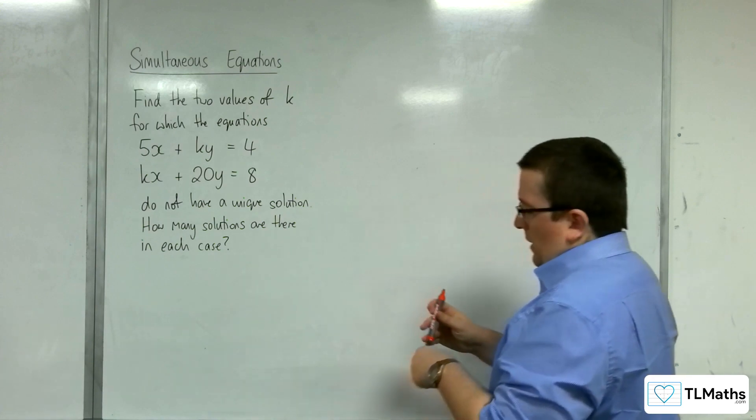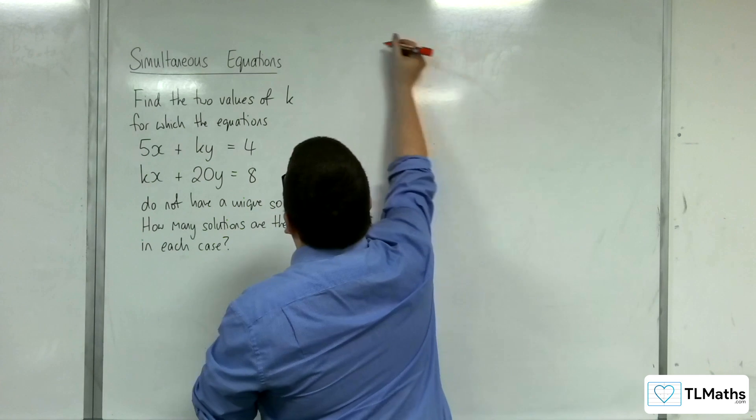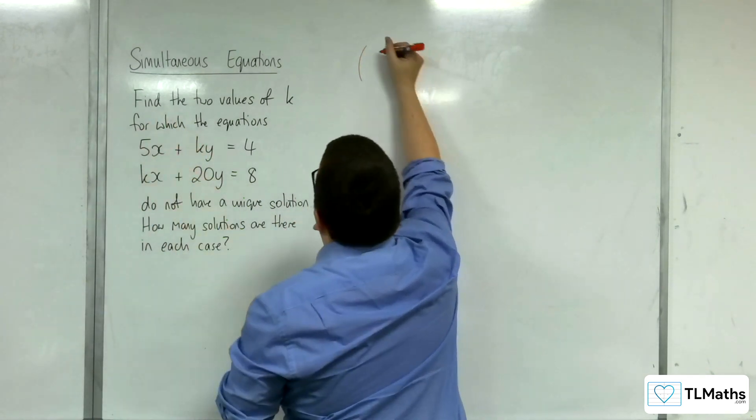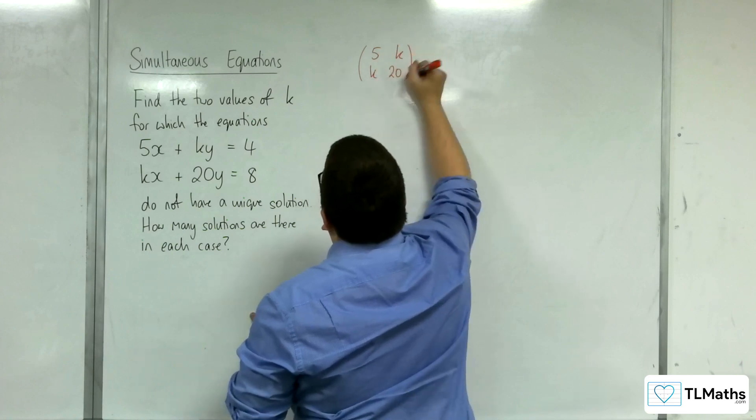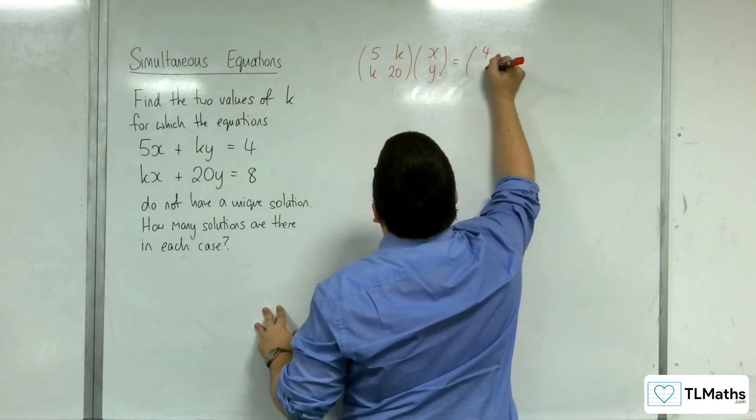So if we were going about this as we have in the previous two videos, we would first of all write down the matrix of the coefficients. So 5k, k20, and that would be multiplying with x, y, and that would be getting me 4, 8.